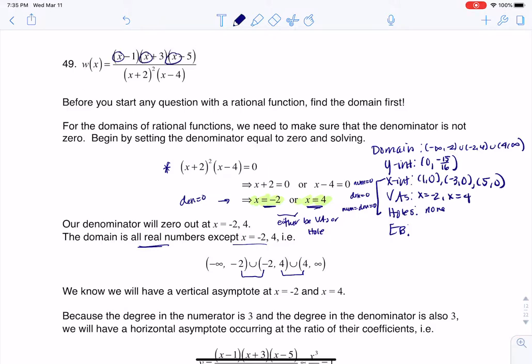I have X times X times X. So basically I have an X-cubed up here, and then I have X-squared times X. So that's basically like saying X-cubed over X-cubed. So the degree in my denominator is the same as the degree in my numerator.